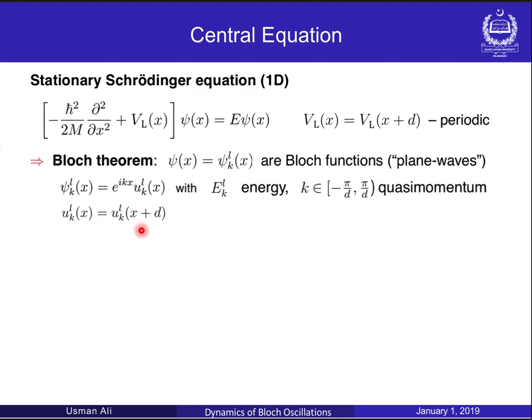A particle in a periodic potential is a quasi-particle with energies labeled by a band index L and a quasi-momentum index K. The quasi-momentum repeats itself within a reciprocal lattice vector and is therefore restricted to the first Brillouin zone.